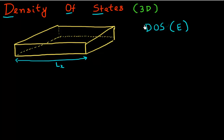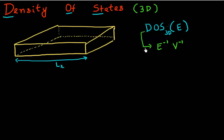Keep in mind that this DOS has no correlation with the operating system popularized by Microsoft in the 90s. DOS here stands for density of states for a semiconductor — specifically, density of states for a three dimensional semiconductor. This density of states has units of number of states per unit energy per unit volume, which for a 3D semiconductor translates to per eV and per centimeter cubed.